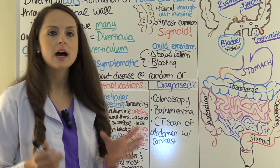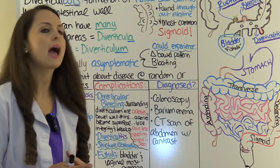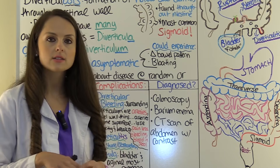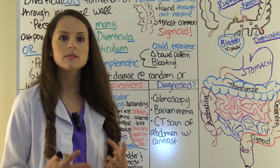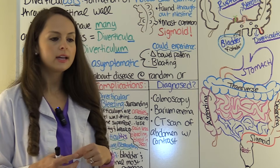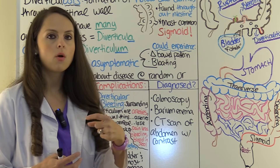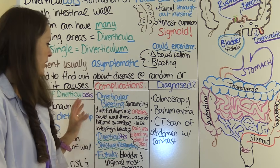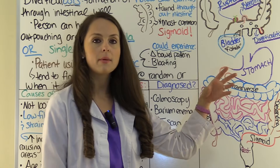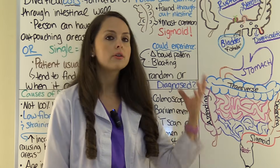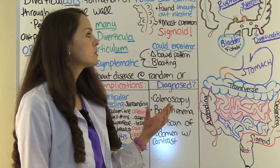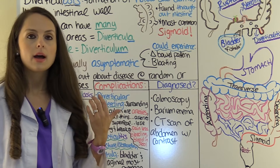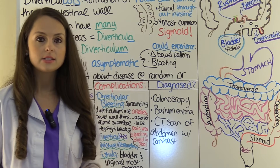Now let's talk about the complications of diverticulosis. One thing a person can have is called diverticular bleeding. Around these herniated sacs are arteries that supply the intestines. As that herniated area expands, the bowel wall starts to thin, that artery becomes superficial, and the artery wall can break down. When it breaks down, it can release blood. The patient may have painless bleeding — they may see bright blood in the rectum or in the stool, and they definitely need to go in and get that fixed.